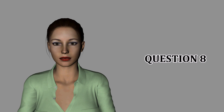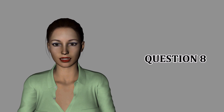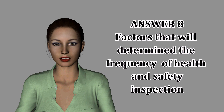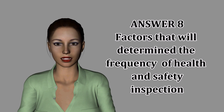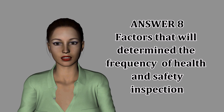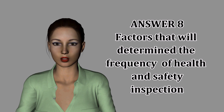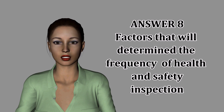Question 8: Outline factors that would determine the frequency with which health and safety inspections should be undertaken in a workplace. Level of risk. Evidence of particular problems from previous inspections, audits, or reactive monitoring. The workforce includes more vulnerable members. Recommendations have been made following risk assessments. Justified by accident history and outcomes of accident investigations. On the basis of reports of ill health or health surveillance. Required by enforcing authorities, insurers, or manufacturer's recommendations. There are new processes, new equipment, or changes to safe systems of work.